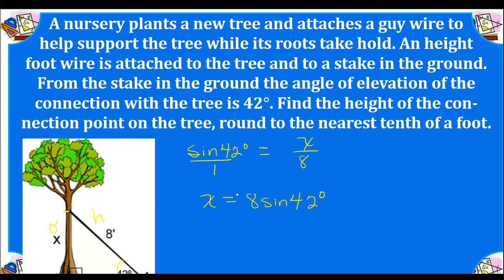Now we're going to use our calculator: 8 times the sine of 42 degrees gives us 5.353. It says round to the nearest foot, so X is about 5 feet.